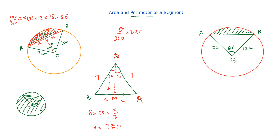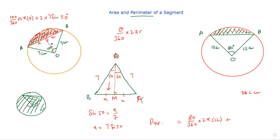I would like you to find the perimeter of this shaded part in the same way. The arc length would be 80 over 360 times 2 pi into 12. Now I have to find this chord's length, which is AB. Let me draw a triangle so I can tell you how I would go about it. This is my O, this is my A, and this is B. Let me call this point M.